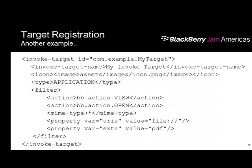Here's another example with a subtle but important difference. In this case, the target says it can view or open any MIME type — using a wildcard star — but only for URIs with a file:// scheme and a .pdf extension. So although you've defined star as the MIME type, the PDF extension filter catches the requests — only PDF-extension requests will come through as invocation requests.